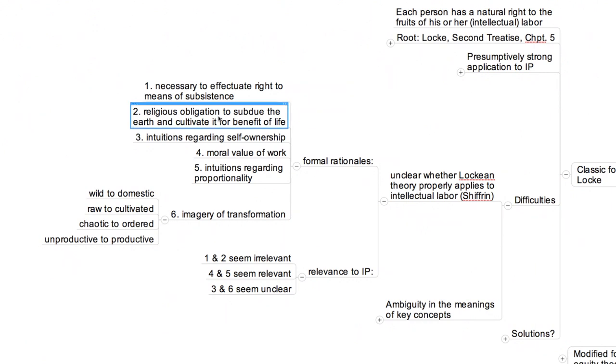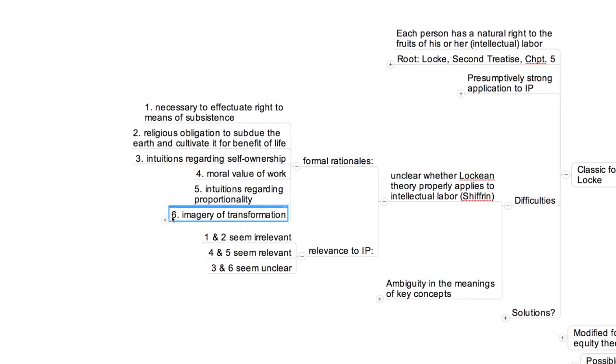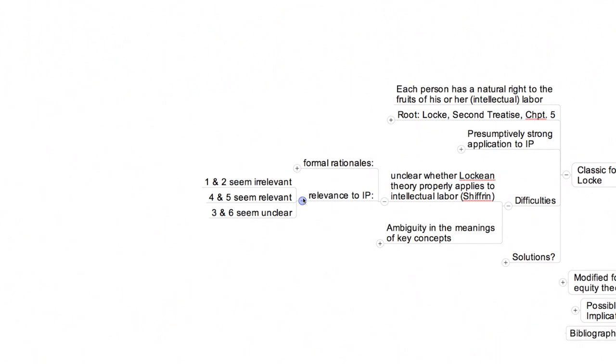The relevance of the other two arguments is uncertain. In short, there's trouble at the threshold. But let's assume that rationales four and five, the moral value of work and intuitions regarding proportionality, are indeed adequate to launch a Lockean justification for copyright. We can thus move on to more detailed questions concerning the implications of Locke's approach for the law. Quickly, we encounter other difficulties.